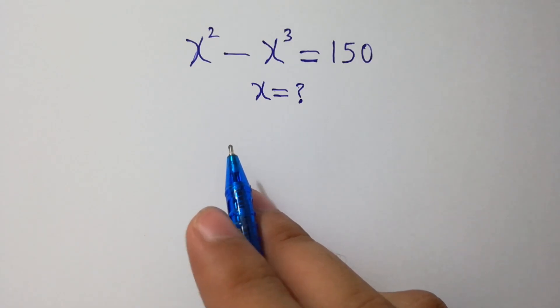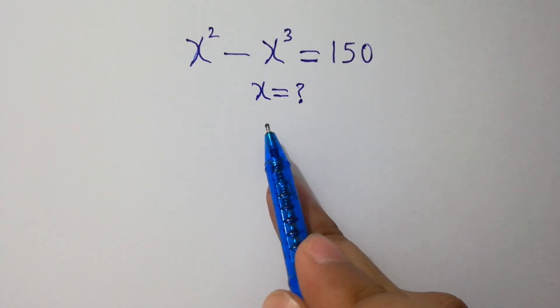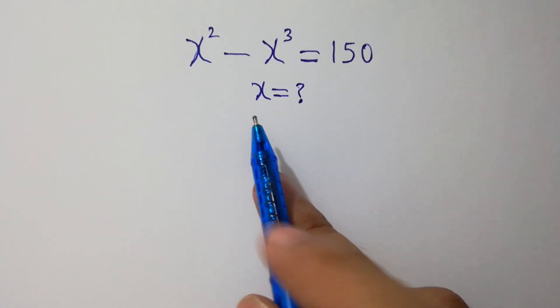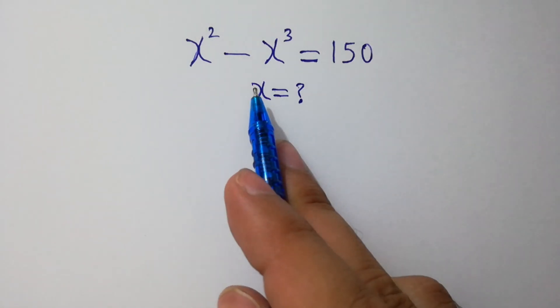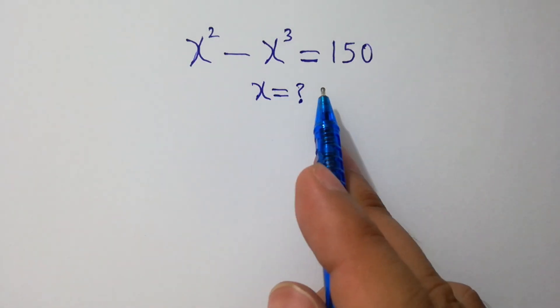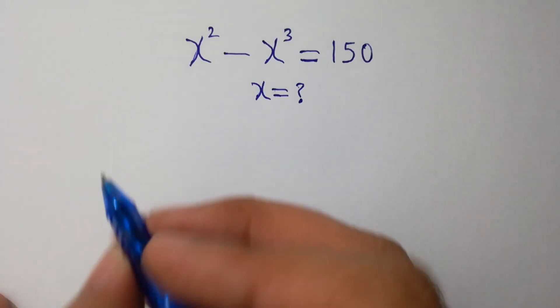Hello friends, what is the value of x if x squared minus x cubed equals 150? Let's solve it.